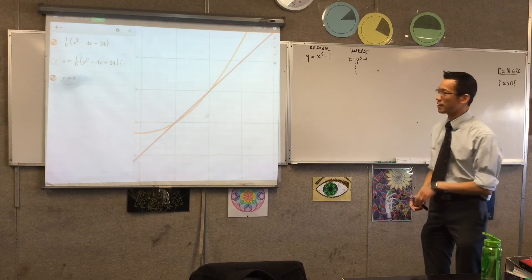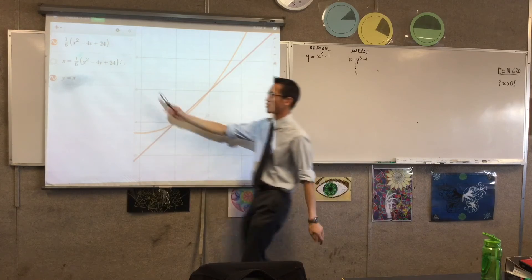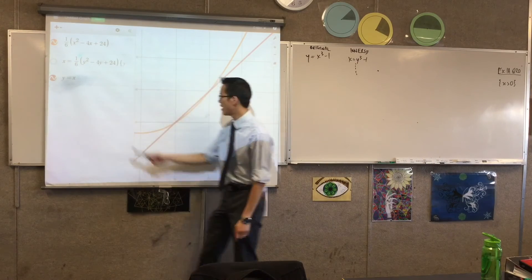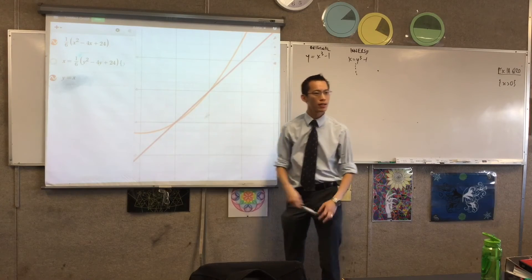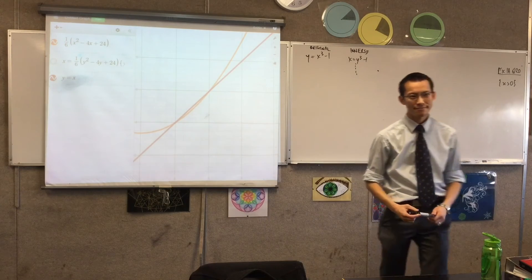Whereas, if I'm off of my Y equals X line, you reflect this guy, he comes over here. You reflect this guy, he comes over here. But when you reflect something that's on the line itself, you stay put. Does that make sense? Yeah.